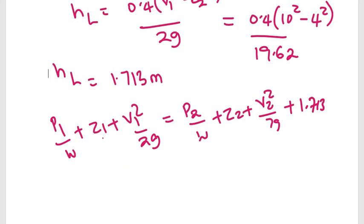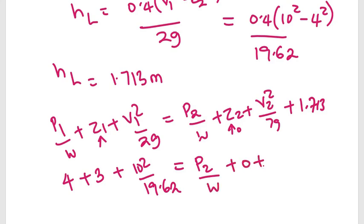Applying Bernoulli's equation: z1 is 3, z2 is 0, P1/W is 4 meters plus 3 plus 10²/19.62 equals P2/W plus 0 plus 4²/19.62 plus 1.713.